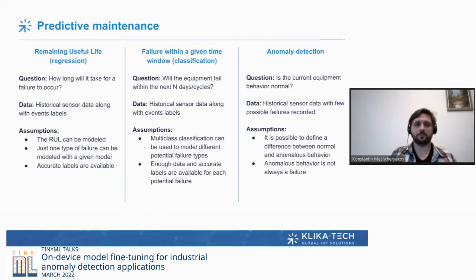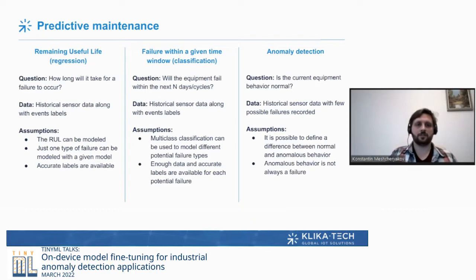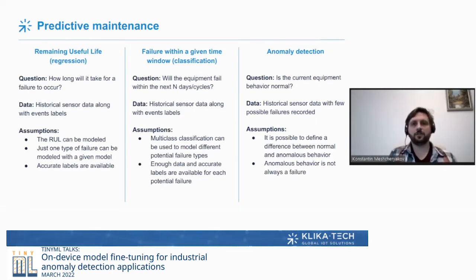There are several assumptions here — for example, that the remaining useful life can be modeled, and that we can only predict one type of failure with a given model. Multi-head models using the same backbone with different heads for different failure types exist but are quite difficult to create. The next approach is to predict failure within a given time window — a classification task answering: will the equipment fail within the next N days or cycles, for example within the next week or month.